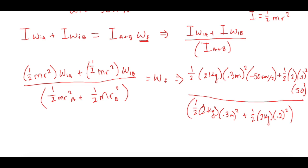Okay, so now let's go ahead and plug that into our calculators. So let me do the top real quick. So 1 half times 2 times 0.3 squared times negative 50 revs per second. And that is plus 0.5 times 2 times 0.2 squared times 50 revs per second. So the top is all equal to negative 2.5. And then we're going to take the bottom of 0.5 times 2 times 0.3 squared, plus 0.5 times 2 times 0.2 squared. And that's equal to 0.13.